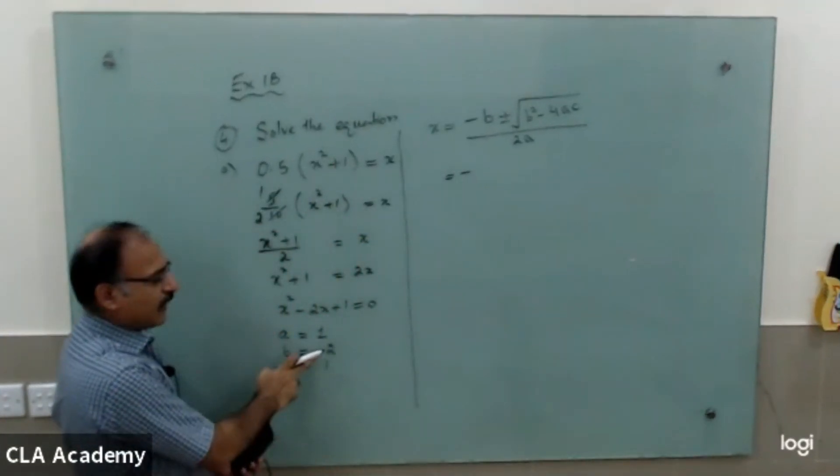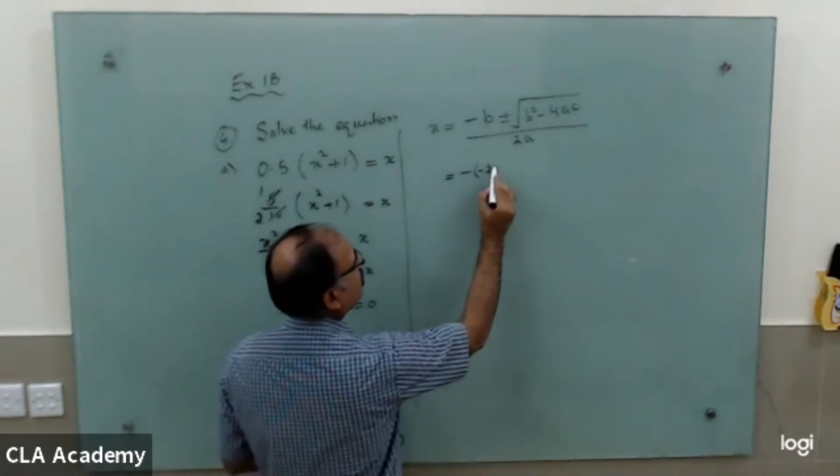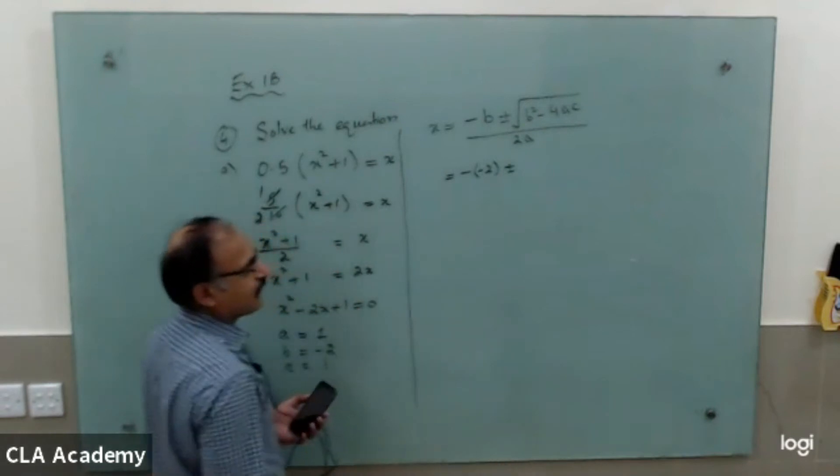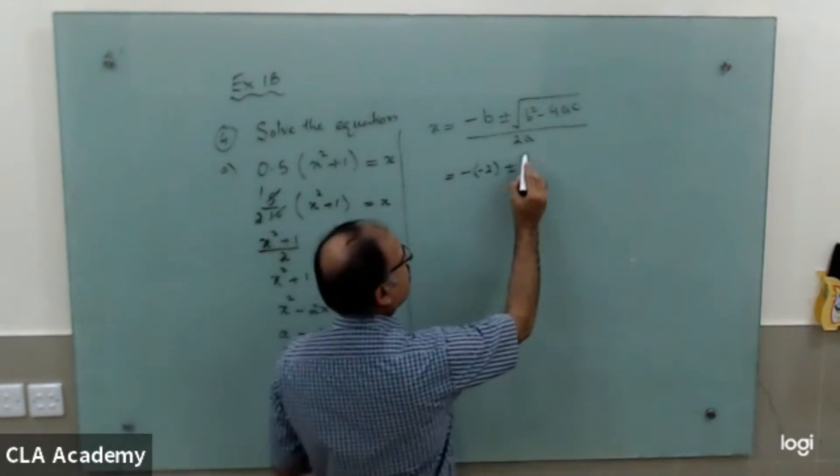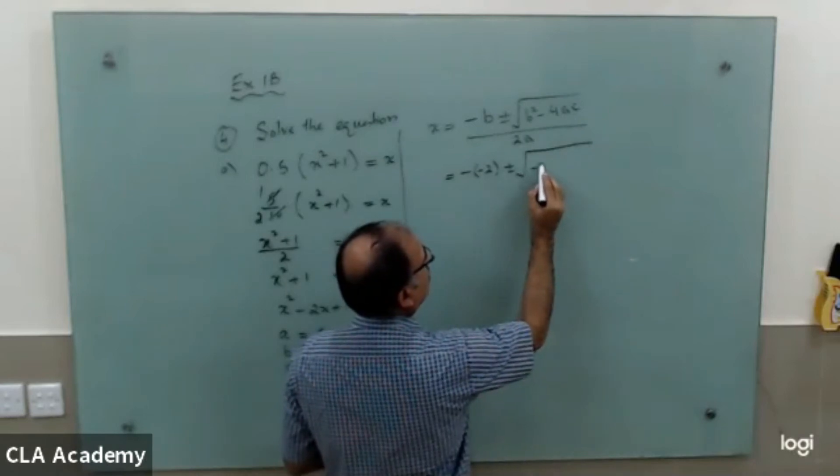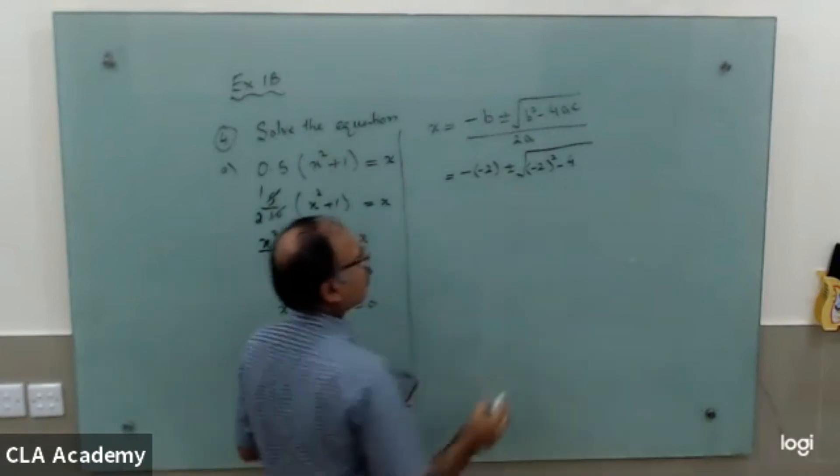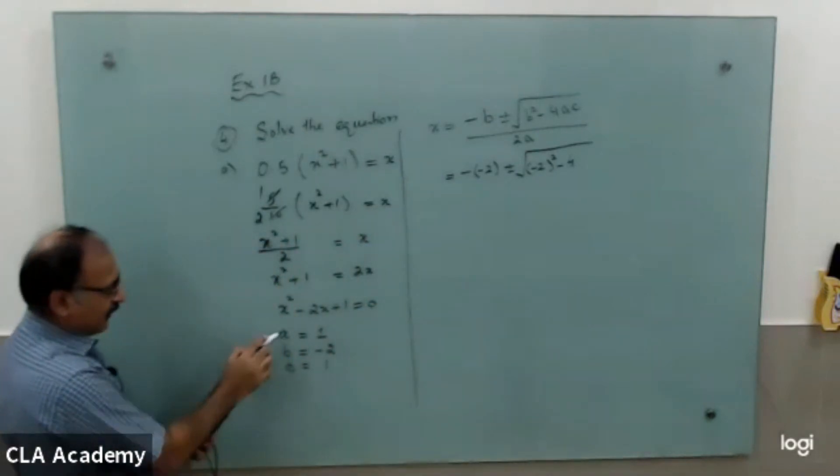So b is minus 2, so we write minus into minus 2, plus or minus. And then in the square root, as it is, b is minus 2 whole squared, minus 4ac. a is 1, and c is also 1.